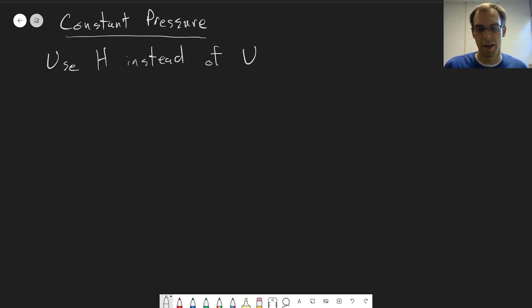So in this video we're going to be looking at doing the same thing but now at constant pressure instead of constant volume. And the trick here is we're going to use H, which is sort of a thermodynamic function that's meant for constant pressure. It's equal to the heat at constant pressure instead of U.